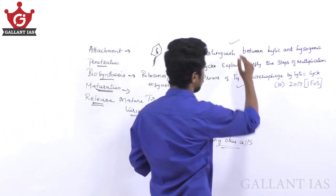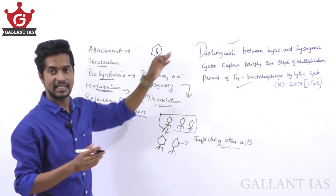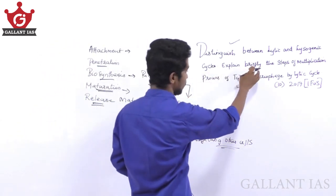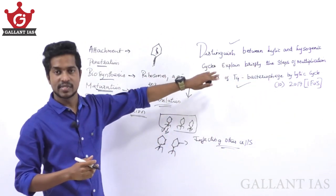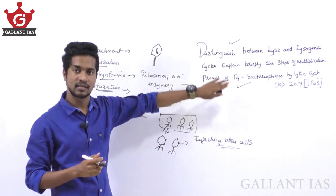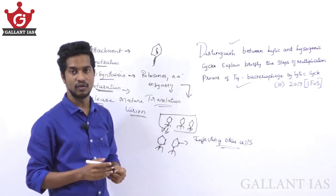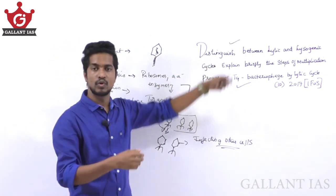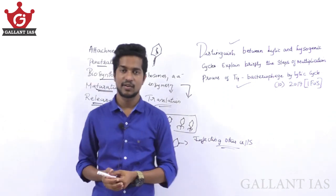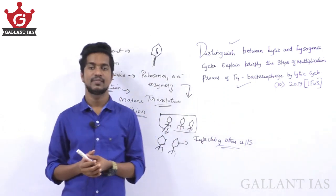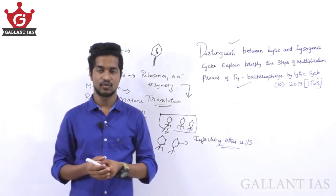So we have addressed both parts of the question: the differences between lytic and lysogenic cycle, and the steps for the multiplication of T4 bacteriophage. Stay tuned on our channel for further updates related to the Botany optional. Thank you for watching.